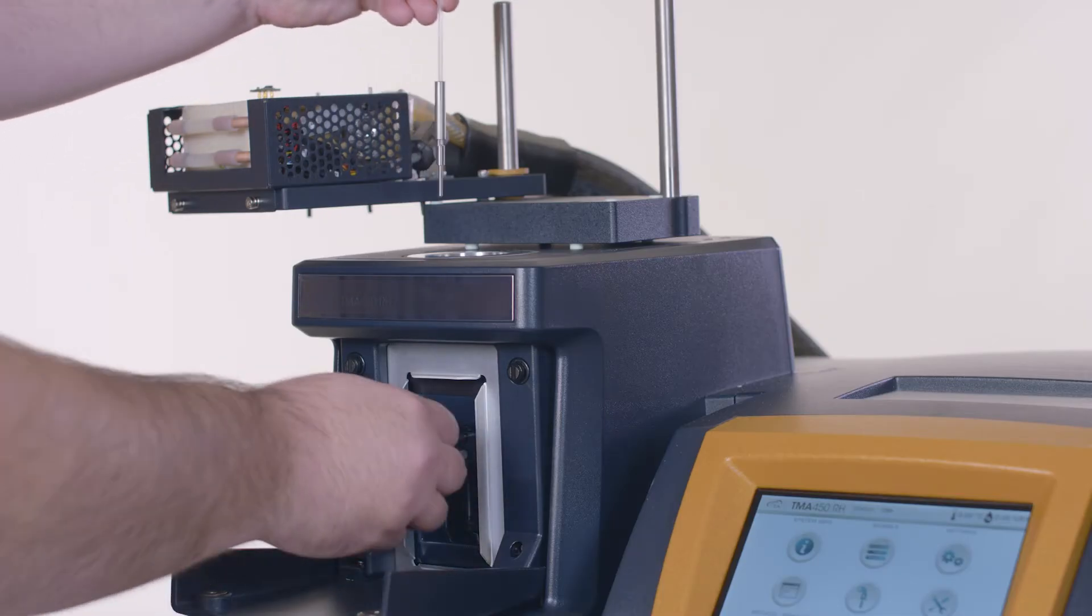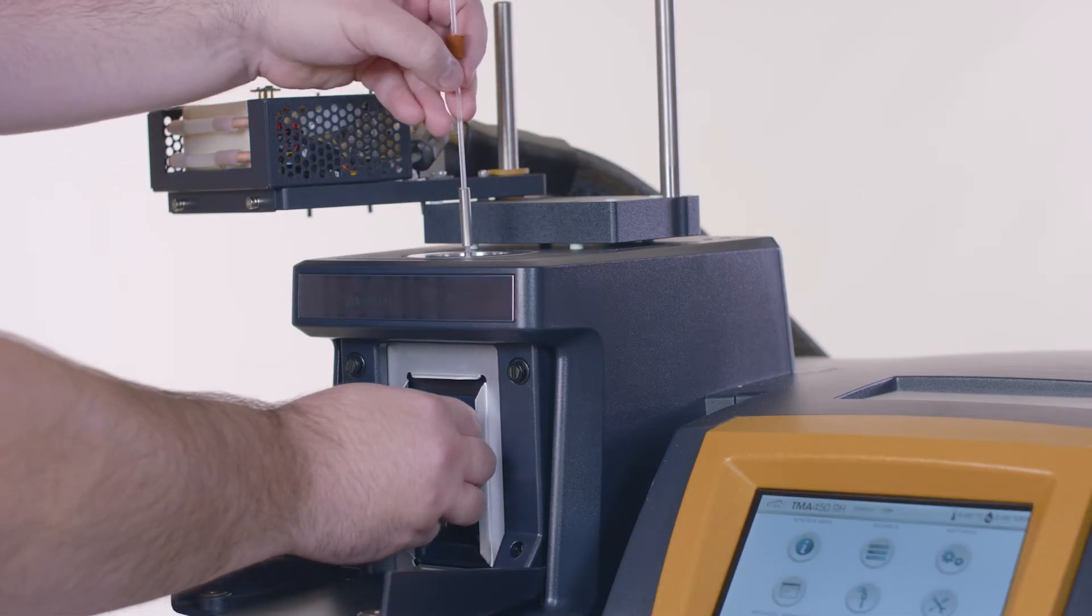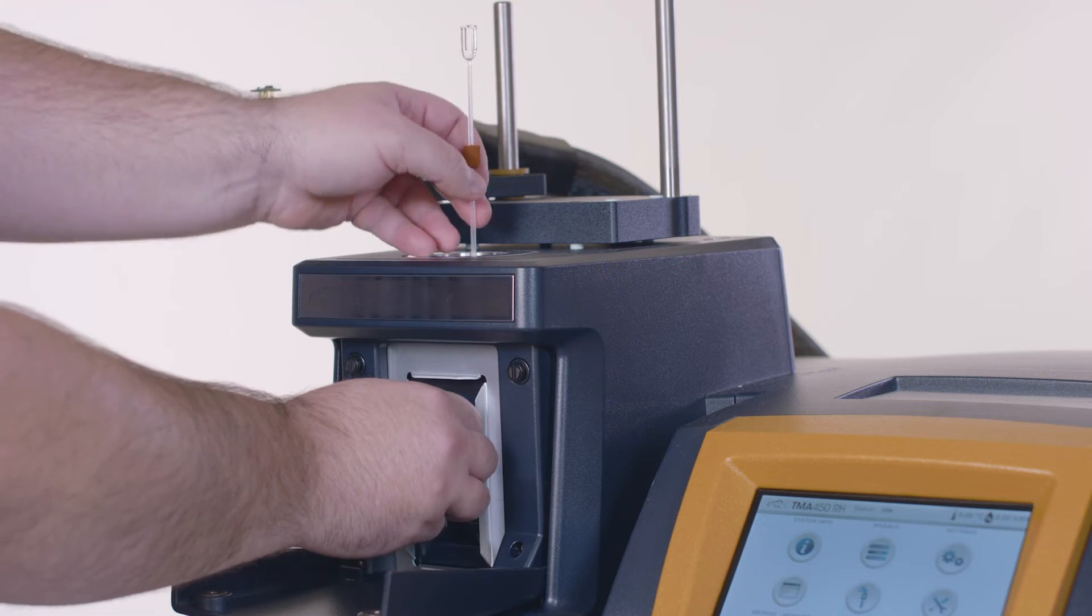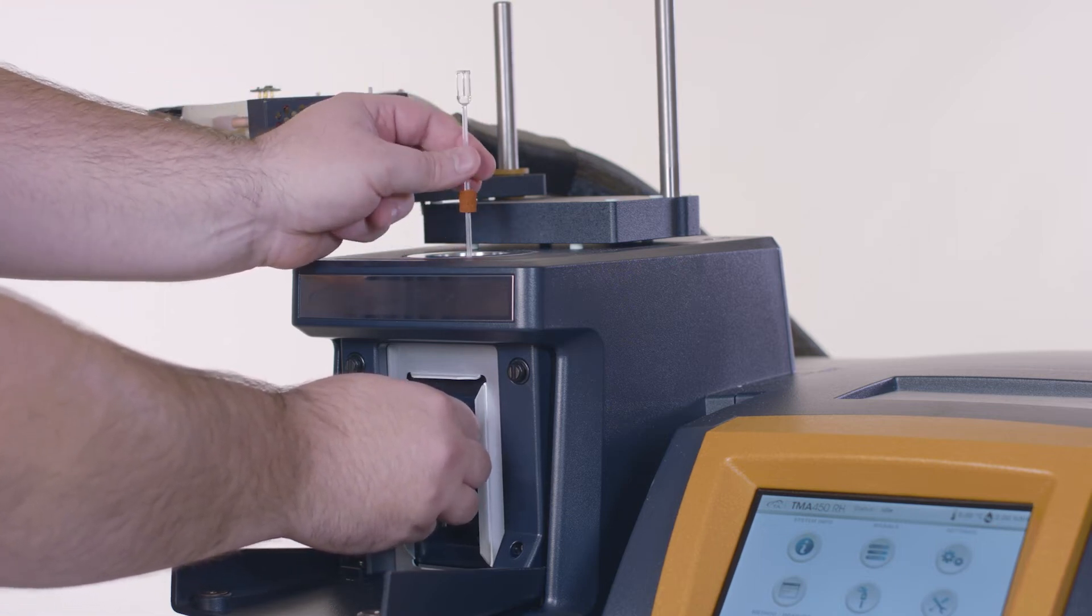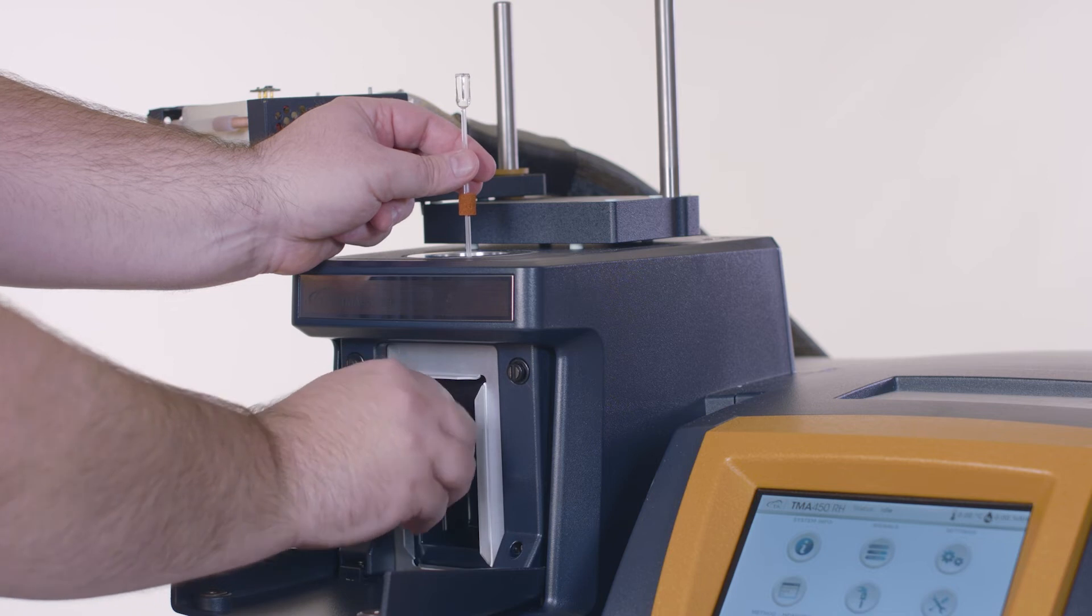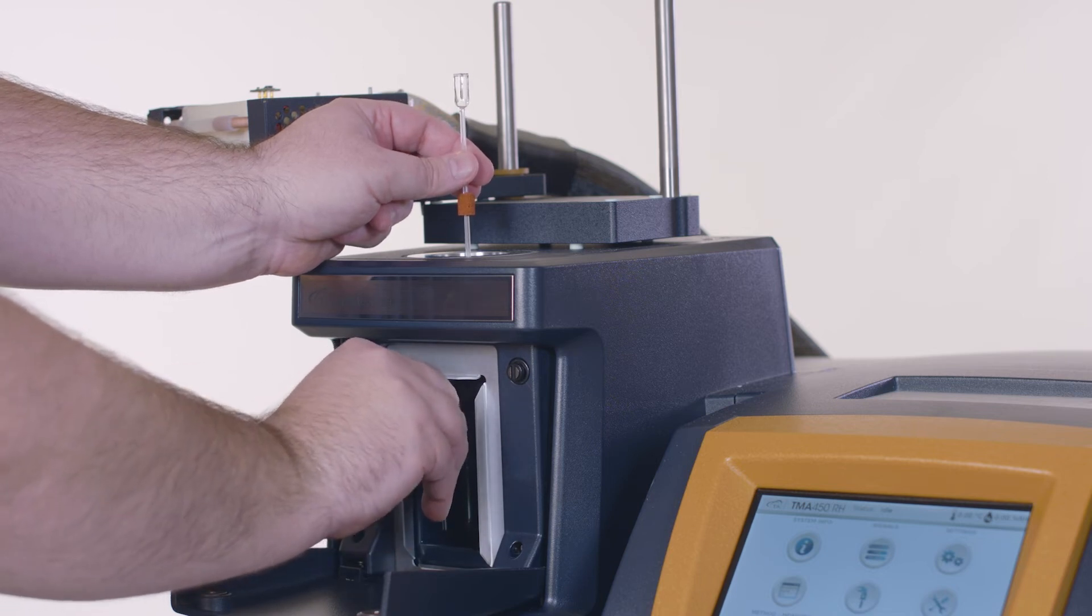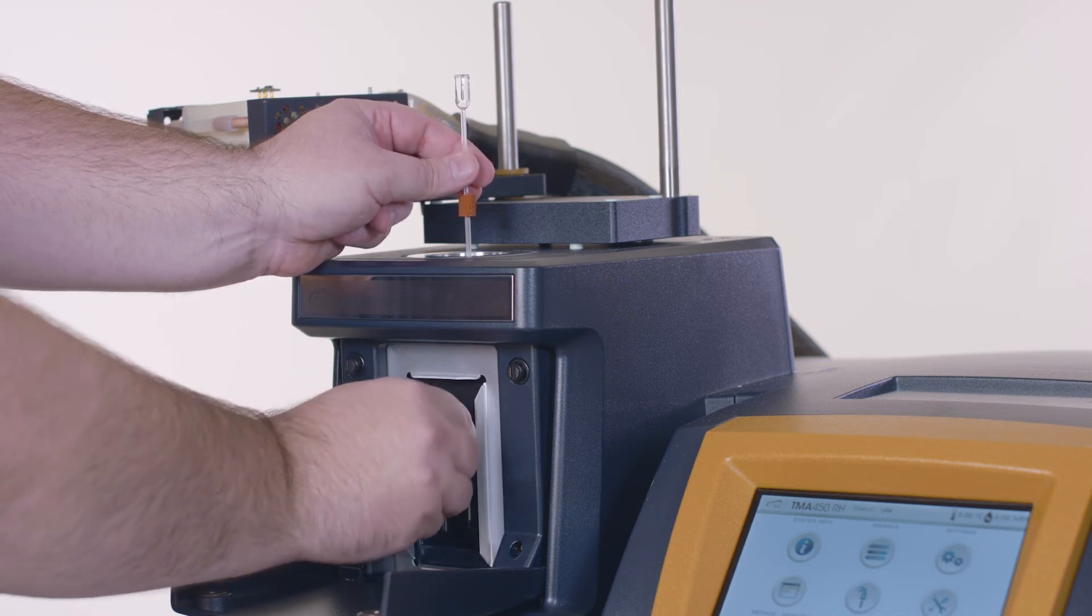The film fiber probe sits entirely inside its stage and needs to be put in first. Hold the probe locking lever into the up position and lower the probe into the opening until you can feel it seat in the locking mechanism and then tighten.